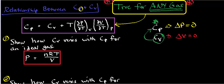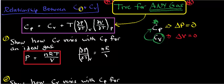The first thing we're going to do is apply this to the ideal gas formula. I want to take the partial derivative of P with respect to T, holding volume constant. If I'm differentiating P with respect to T using the ideal gas law, this is simply going to be nR over V.